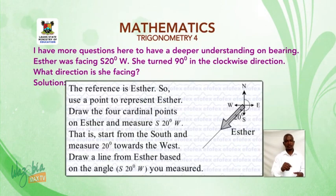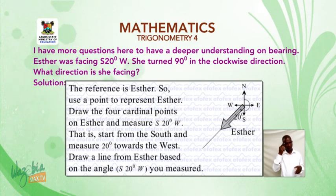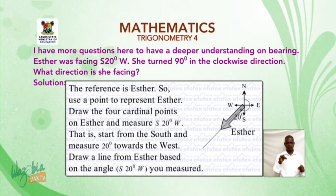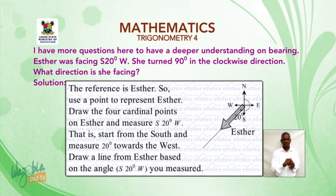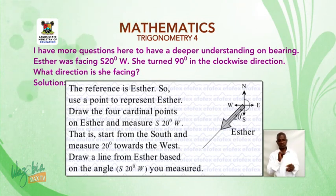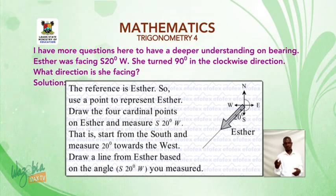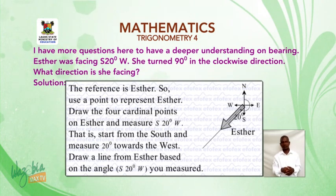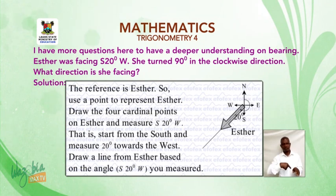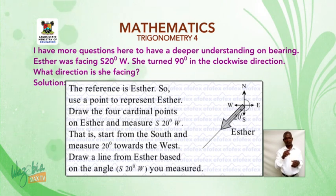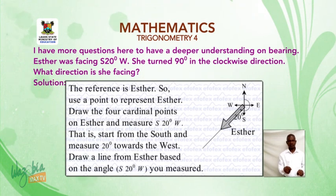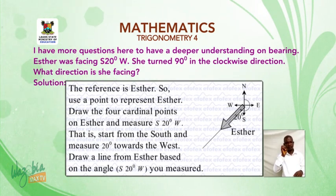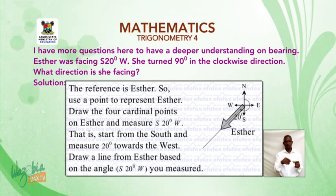Welcome back to the second segment. I have more questions here to deepen your understanding of bearing. Question one: Esther was facing 20 degrees west of south. She turned 90 degrees in the clockwise direction — what direction is she facing? Solution: the reference is Esther. Use a point to represent Esther. Draw the four cardinal points on Esther and measure 20 degrees west of south — that is, start from the south and measure 20 degrees towards the west. Draw a line from Esther based on the angle measured.